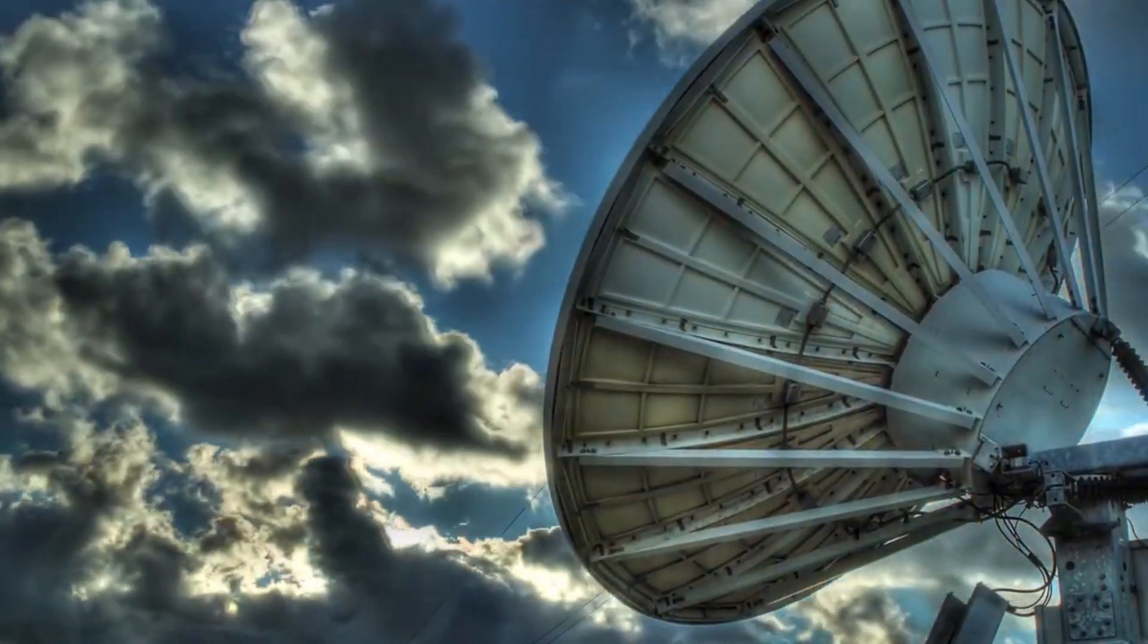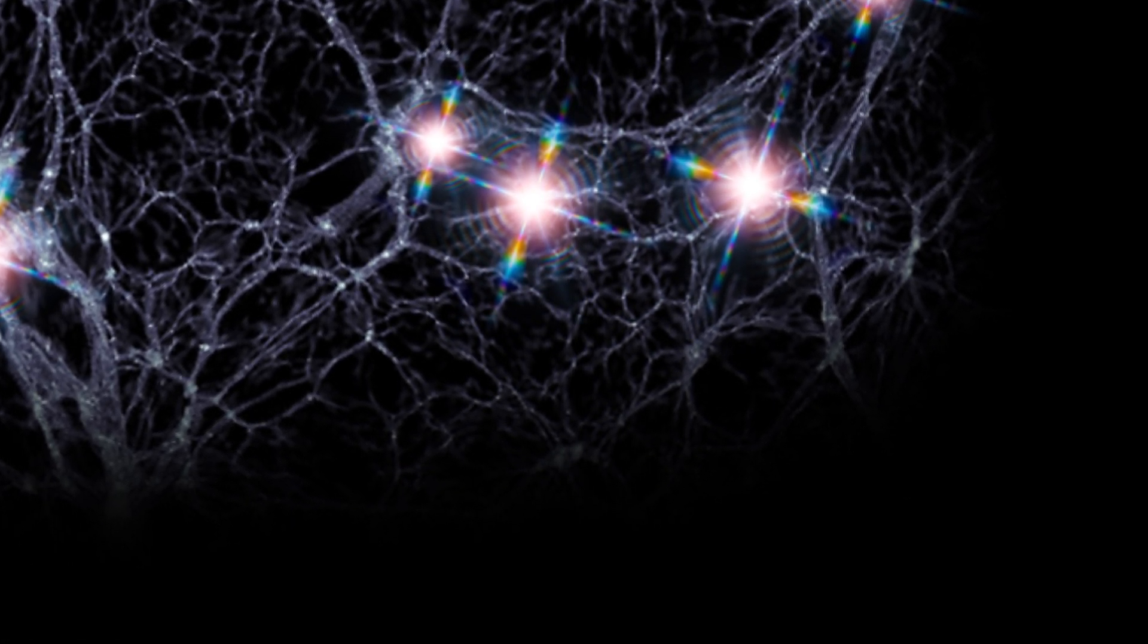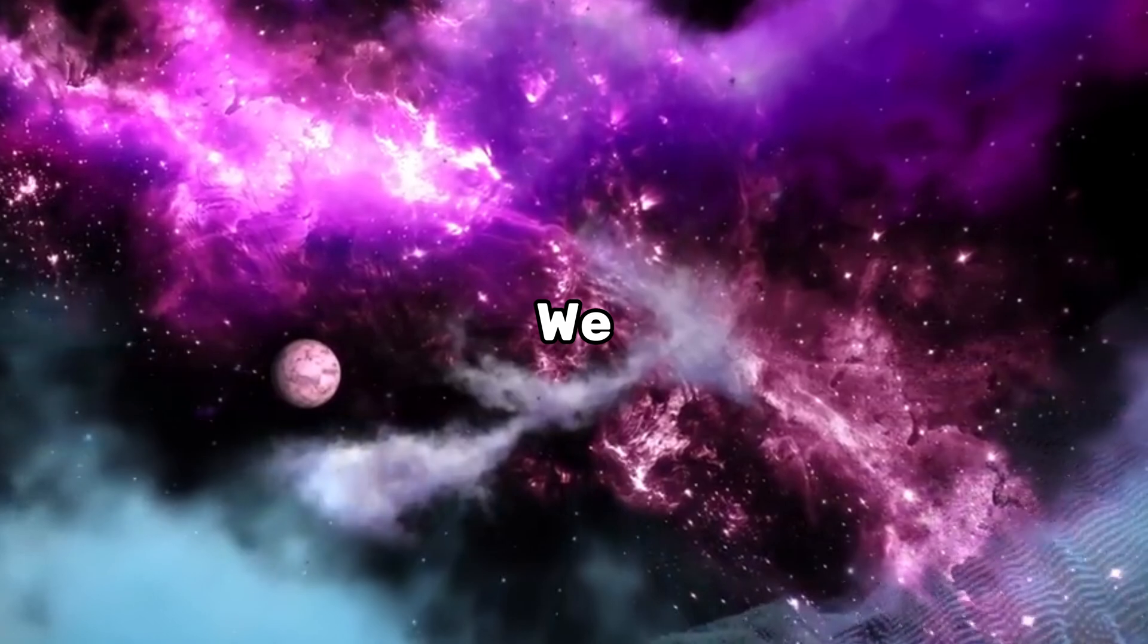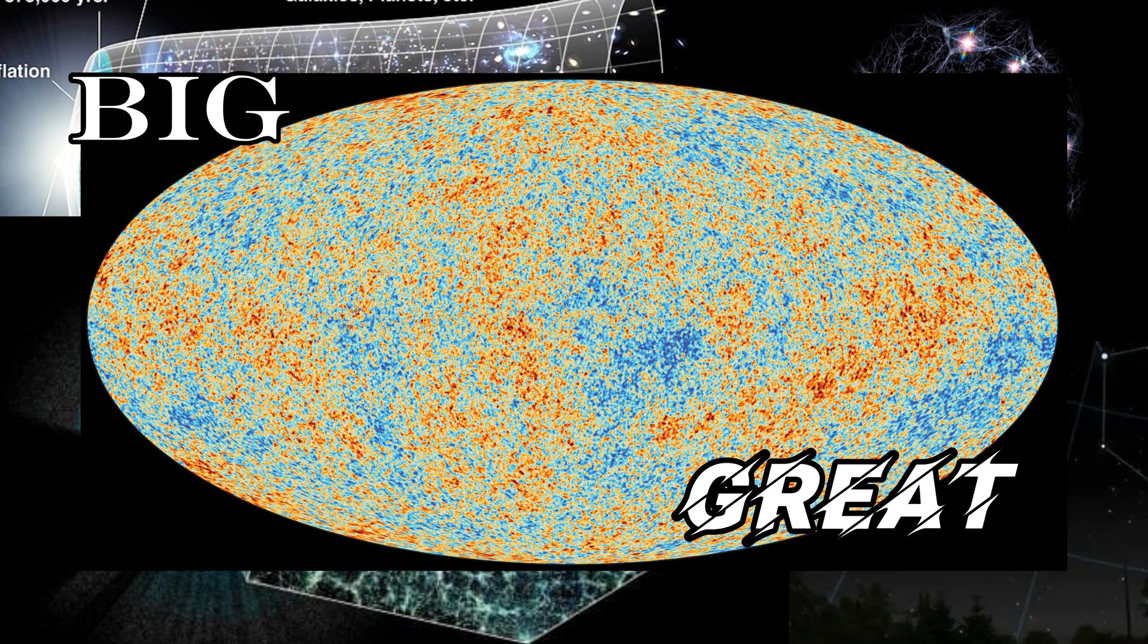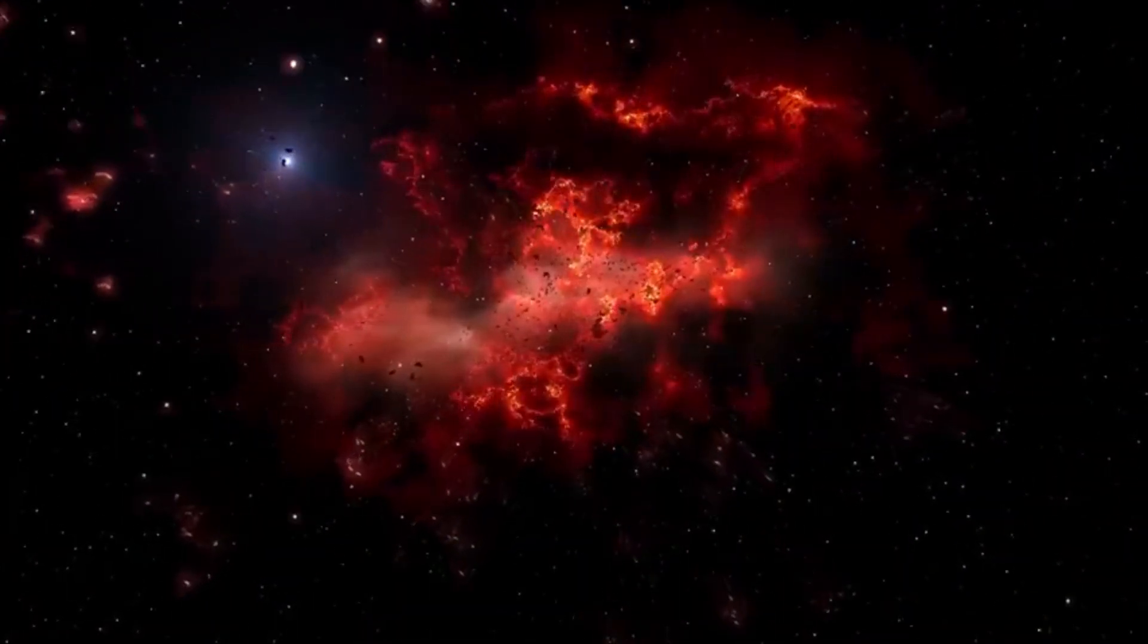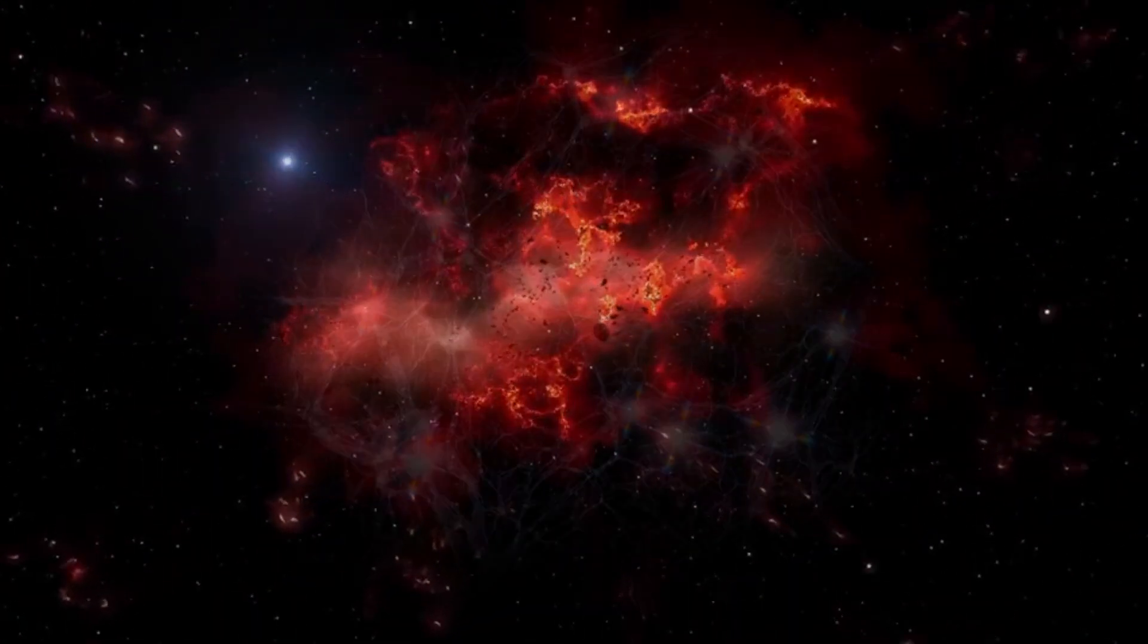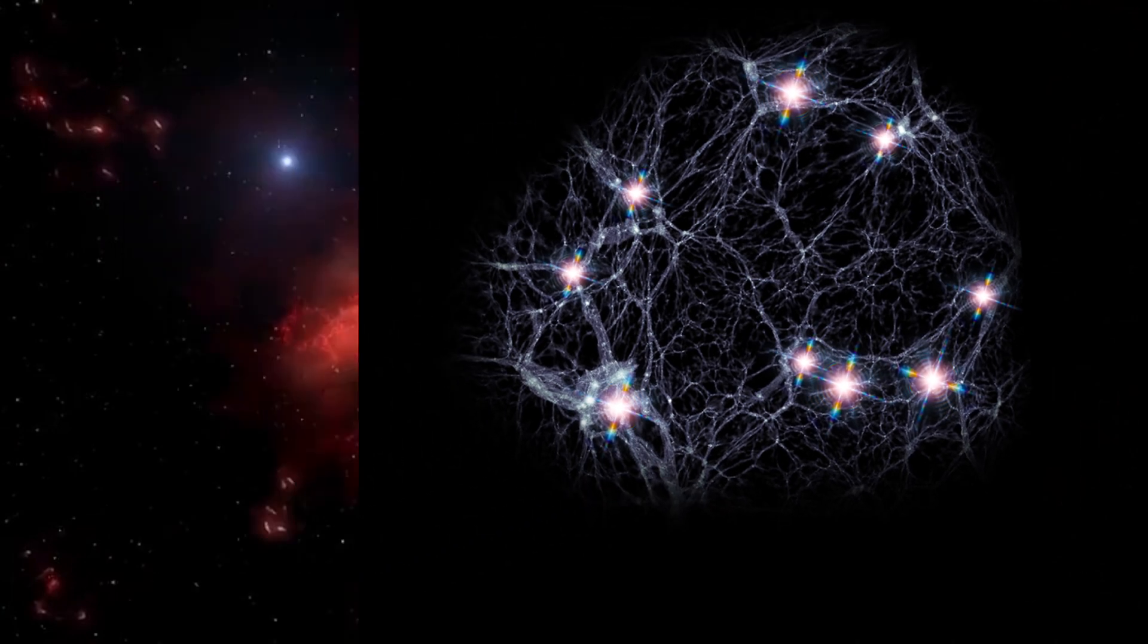In January, astronomers announced the detection of a colossal ring-shaped structure in space that they call the Big Ring. We really like this whole big and great thing. We name these universal. The discovery challenges some of what we thought we knew about the universe. The Big Ring is 9.2 billion light years distant from Earth, and its discovery was led by Alexia Lopez, a PhD student at the University of Central Lancashire.